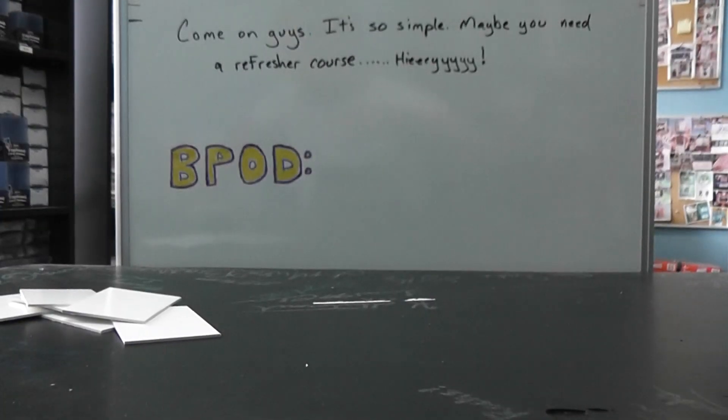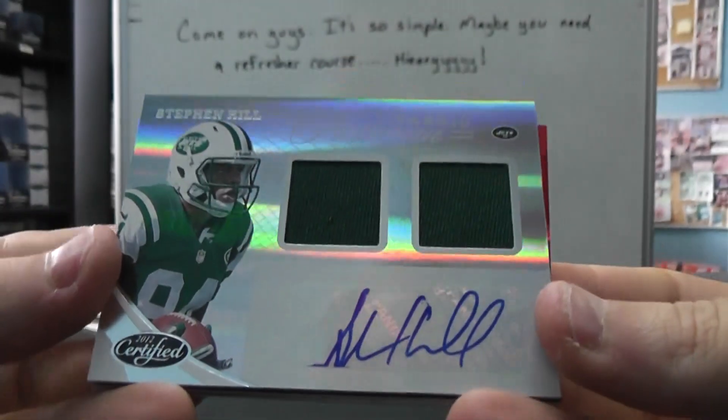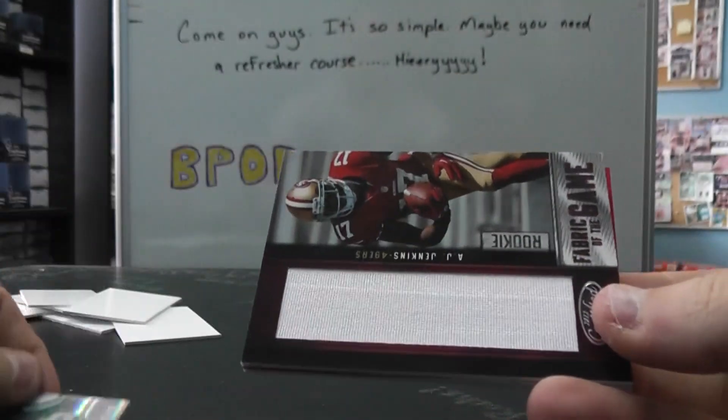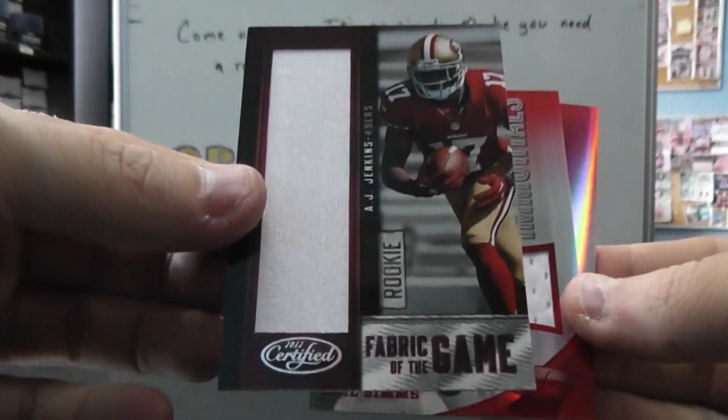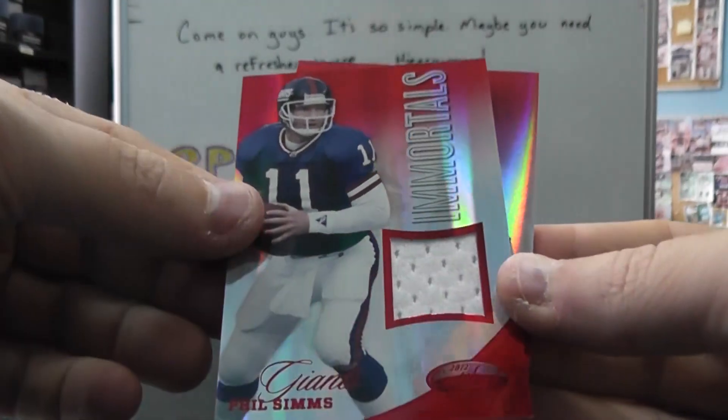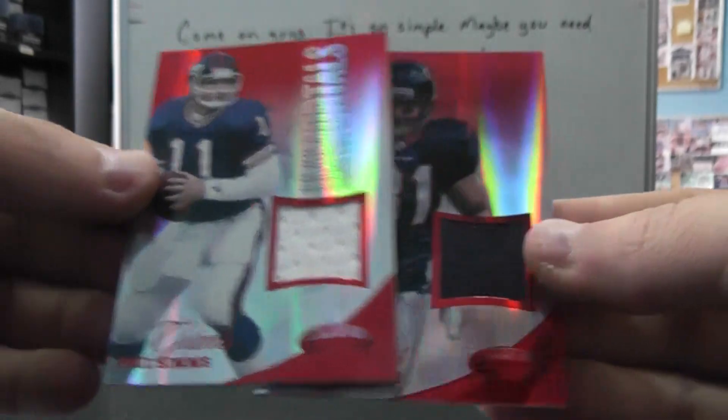No one-on-one in this one Brad, what can we do? Can't get them in all, I guess. Stephen Hill dual jersey autograph. AJ Jenkins, oh these are all top ways. AJ Jenkins Jumbo jersey Fabric of the Game. Phil Simms and Owen Daniels single jerseys.